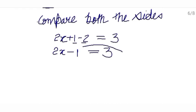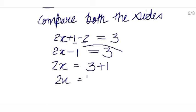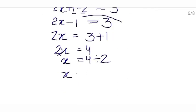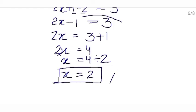Move this to the other side: 2x equals 3. After moving, this 1 will be of plus sign, so 2x equals 4. You want to find the value of x — here 2 is in multiplication, so after moving to the other side it will be in division. When you divide 4 by 2 you get 2, so the value of x is 2. This is your answer.